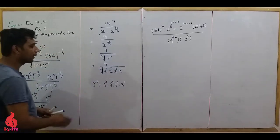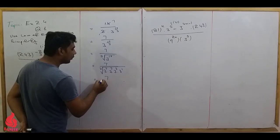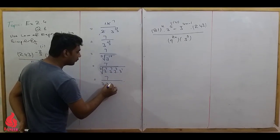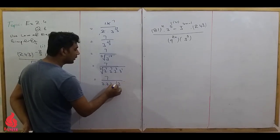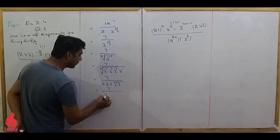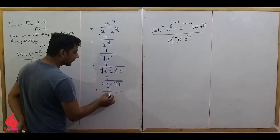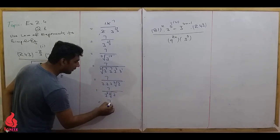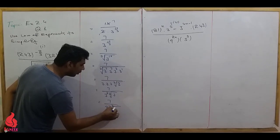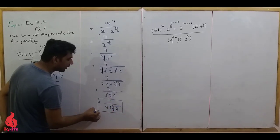Solving the radical: we take the cube root. Outside the cube root we get 3 raise to power 3, which is 27, and inside remains the cube root of 3. So 7 over 3 raise to power 3 gives 7 over 27, and the final answer is 7 over 27 times the cube root of 3.